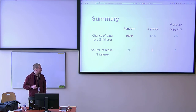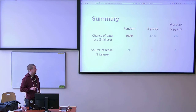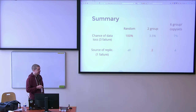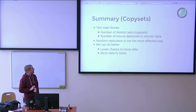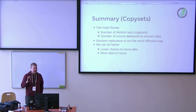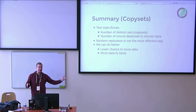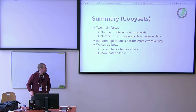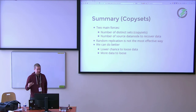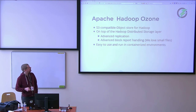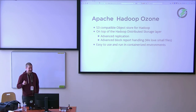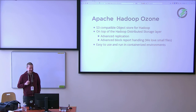So that was the replication algorithm. It can be improved further, for example by incorporating rack awareness, but the main idea behind the replication is the same. That was the copy set and tiered replication summary: both papers are about finding the right copy sets. There are two competing forces — the number of copy sets and the number of source data nodes available for recovery — and we need to find a balance between them. I work in Apache Hadoop Ozone and I think this is a good illustration of why storage is an exciting part of the overall system.